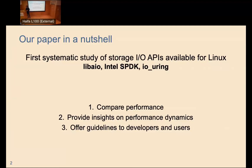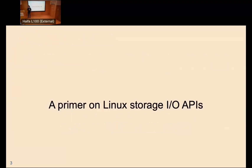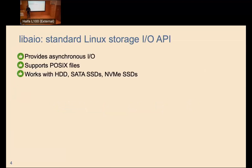This was mostly an experimental paper. Let's look at these storage APIs before presenting results. The first API is LibAIO — the standard Linux storage API. Most likely, if you're running any application doing IO on a Linux system, it's using LibAIO. LibAIO is very portable and provides asynchronous IO for Linux.